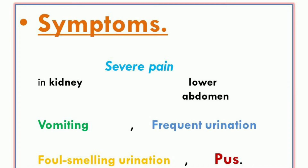Symptoms of kidney stones: گردوں میں پتھری جب بن جاتی ہے تو severe pain in kidney and in lower abdomen — پیٹ کے نچلے حصے اور گردوں میں شدید درد ہوتی ہے — vomiting، frequent urination — بار بار پیشاب آنا — and foul smelling urine with blood and pus — پیشاب کے ساتھ خون اور پس کا نکلنا — یہ ہیں kidney stones کے symptoms۔